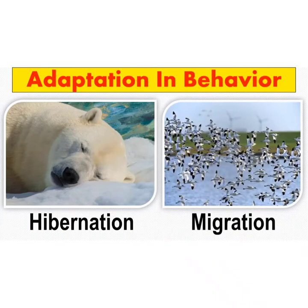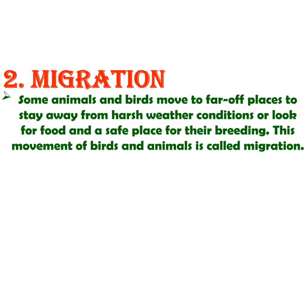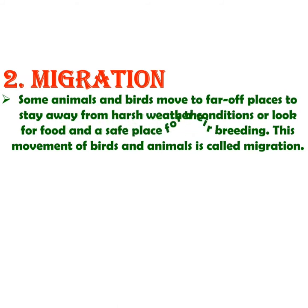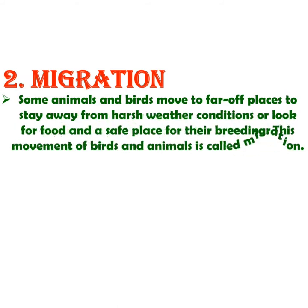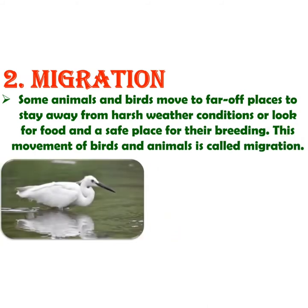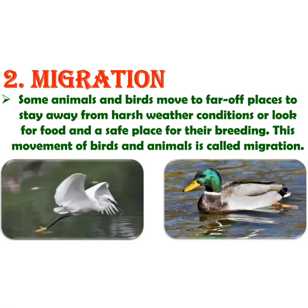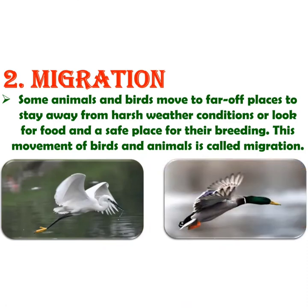Next is migration. Some animals and birds move to far-off places to stay away from harsh weather conditions or to look for food and a safe place for breeding. This movement of birds and animals is called migration. Birds like the Siberian crane and mallard ducks visit India every winter, and leave when winter ends.